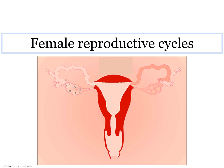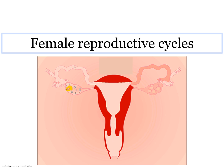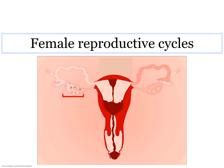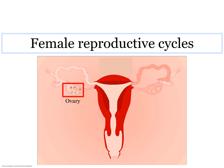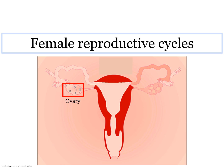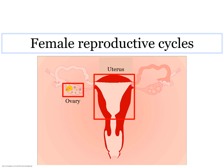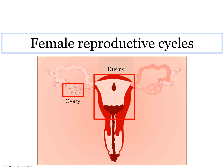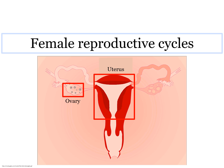Hello everyone, this is part D, the last part for the topic human reproductive system. The last part is female reproductive cycles. I am sure you have learned about this before. There are three female reproductive cycles that we will learn in this subtopic: menstrual cycle, ovarian cycle, and uterine cycle. Bear in mind, all three of these cycles happen at about the same time, yet we are looking at different reproductive organs.